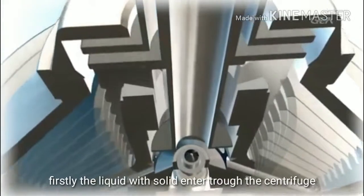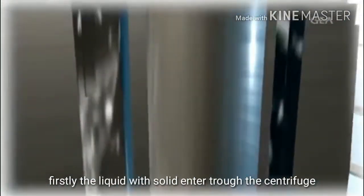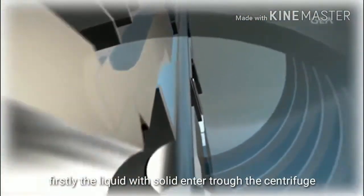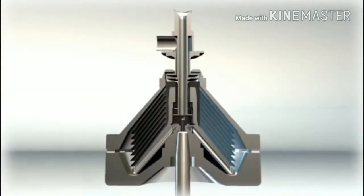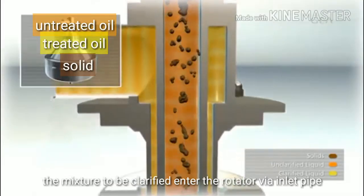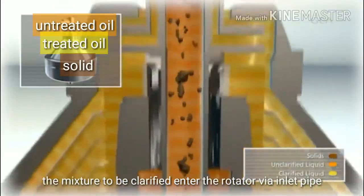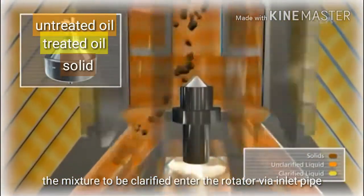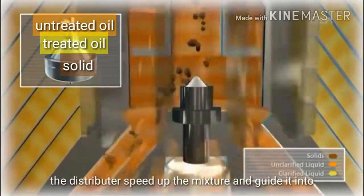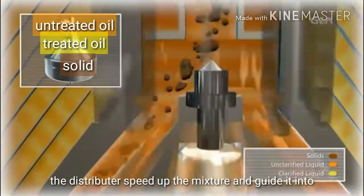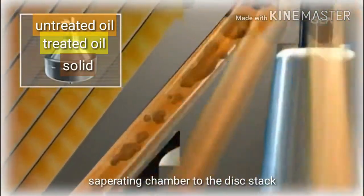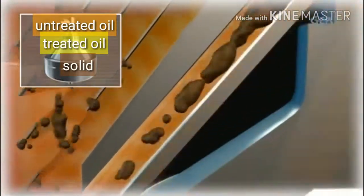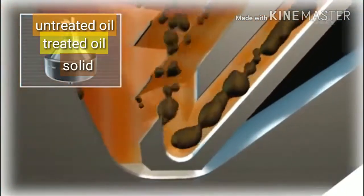In order to understand the entire function of a separator, we simply have to follow the path of a liquid loaded with solids through the centrifuge. The mixture to be clarified enters the rotor via a centrally positioned inlet pipe. The distributor speeds up the product and guides it into the separating chamber to the disk stack. This is where the actual separation of the solids and liquids takes place.